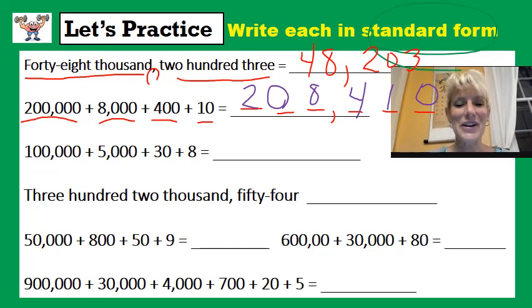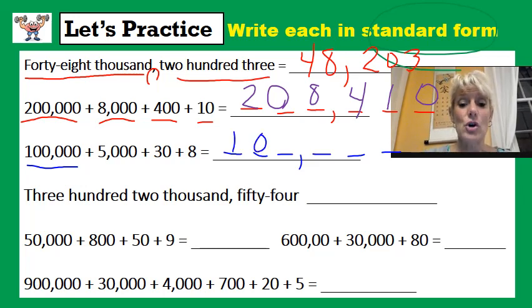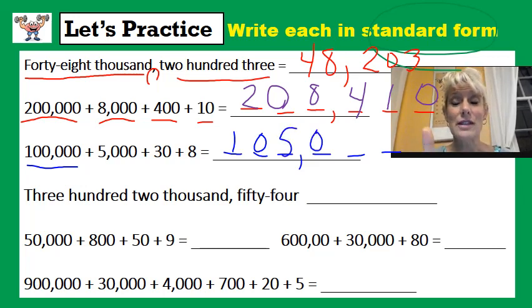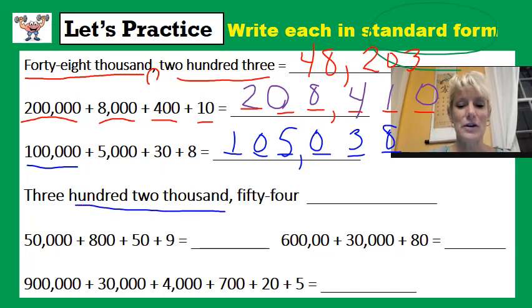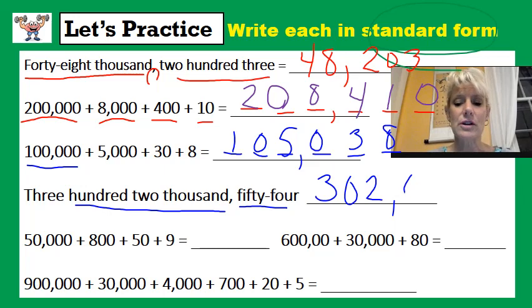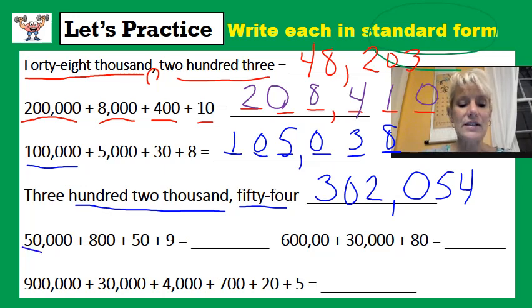Let's go ahead and check these. I have six spaces here, so I need six spaces in my answer. I have one hundred thousand, no ten thousands — did that trick you? — five thousand, no hundreds — did that trick you? — three tens which is 30, and eight ones. So my number is one hundred five thousand thirty-eight. The next one says three hundred two thousand, and the next part just says fifty-four, so there are no hundreds. I hold a place for hundreds and put fifty-four: three hundred two thousand fifty-four.